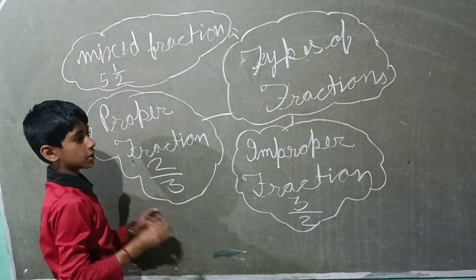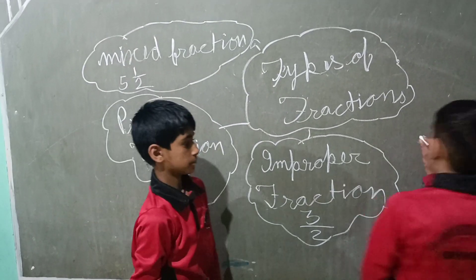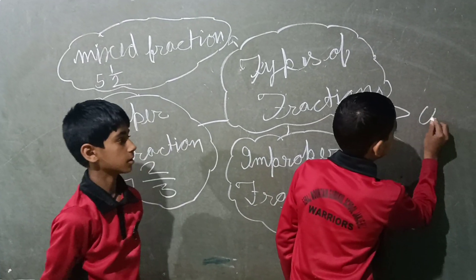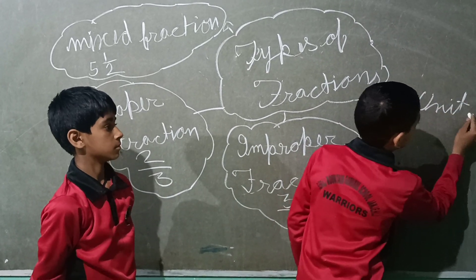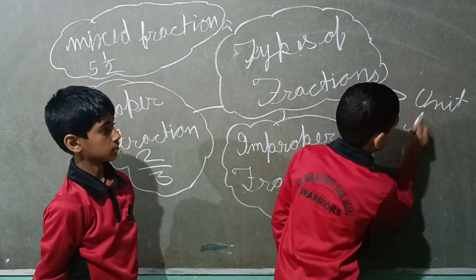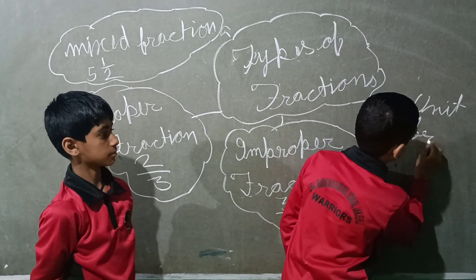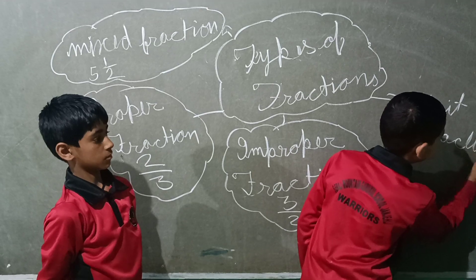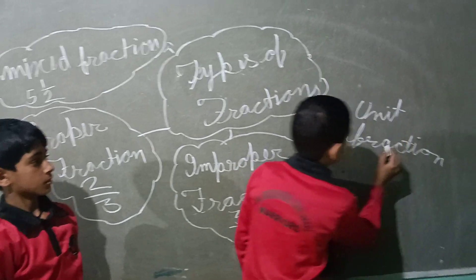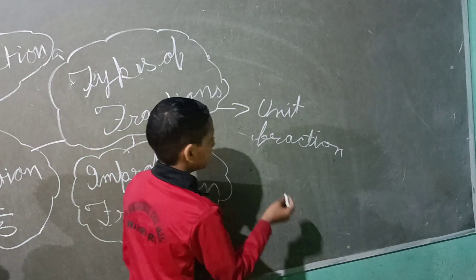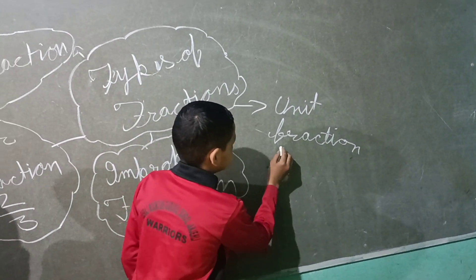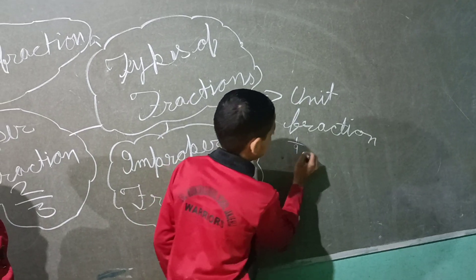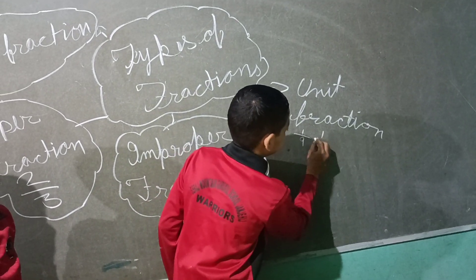Next is unit fractions. For example, 1 upon 9, 1 upon 5.